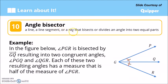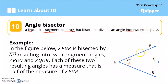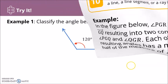Next, we have the angle bisector. An angle bisector is a line, line segment, or ray that bisects — divides — an angle into two equal parts. In this figure, angle PGR is bisected by ray GQ, meaning the measure of angle PGQ equals the measure of angle QGR. The equal tick marks indicate they have the same measure.